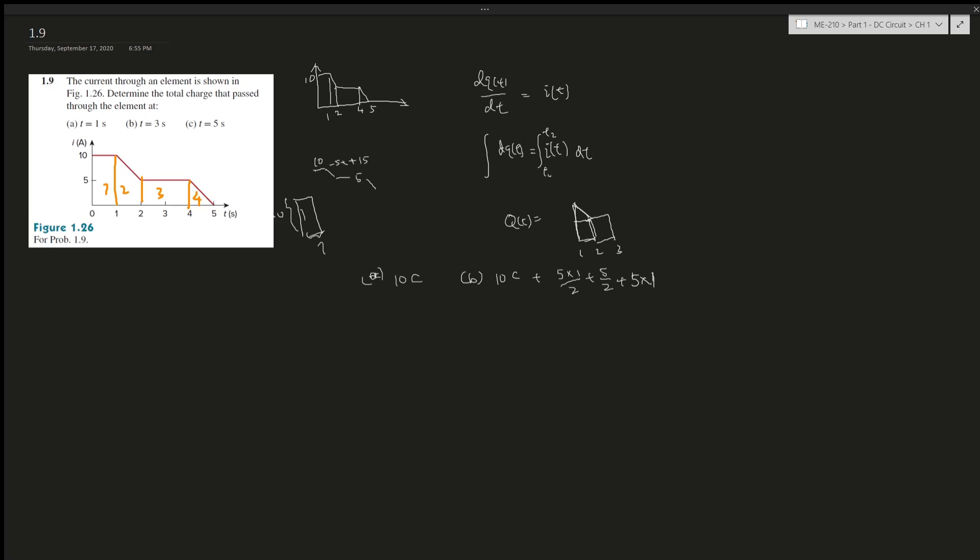This is all the area until 3 seconds. So what is that? 10 plus 10 plus 2.5, so 22.5 coulombs. Then for part C at 5 seconds, that's 22.5 coulombs plus the last bit.